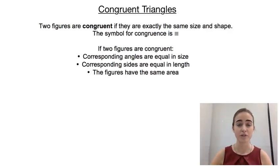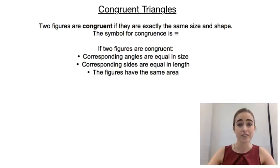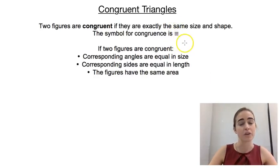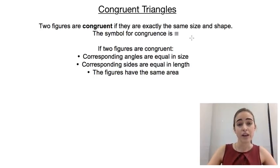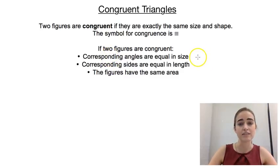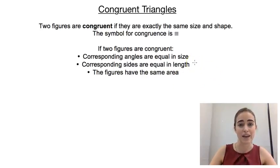In this video, I want to have a look at congruent triangles. More generally, two figures are congruent if they're exactly the same size and shape. The symbol we use for congruence is like an equal sign but with three lines instead of two, because congruent shapes are pretty much equal to each other. If we have two congruent figures, the corresponding angles are equal in size, the corresponding sides are the same length, and the two figures have the same area.